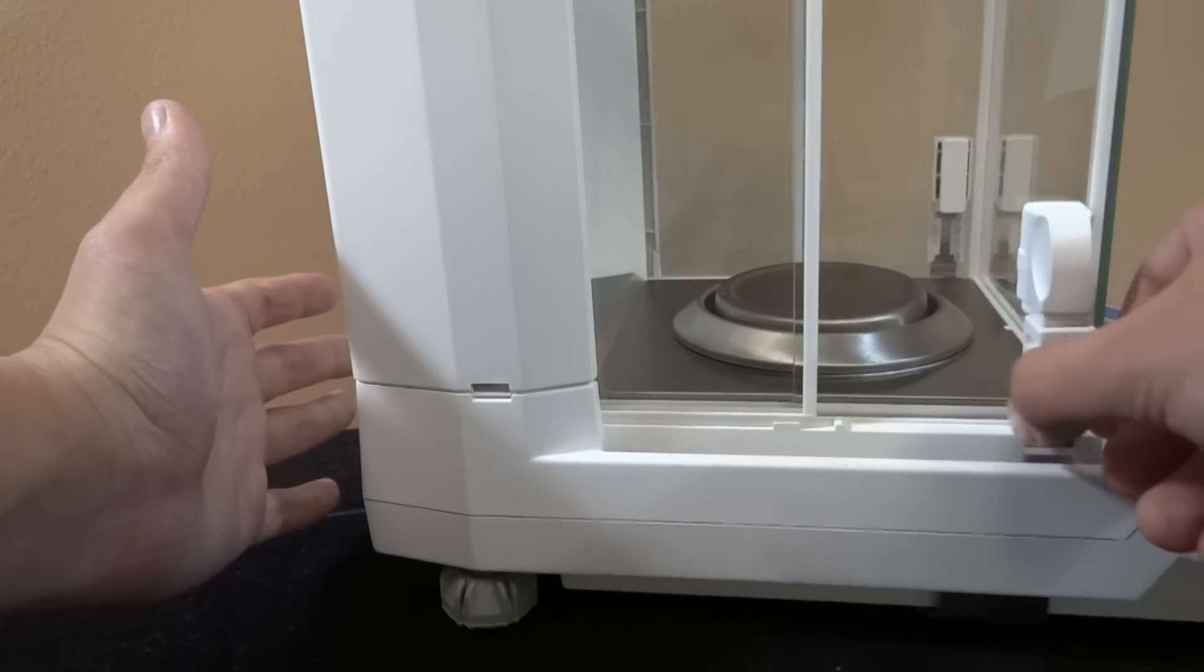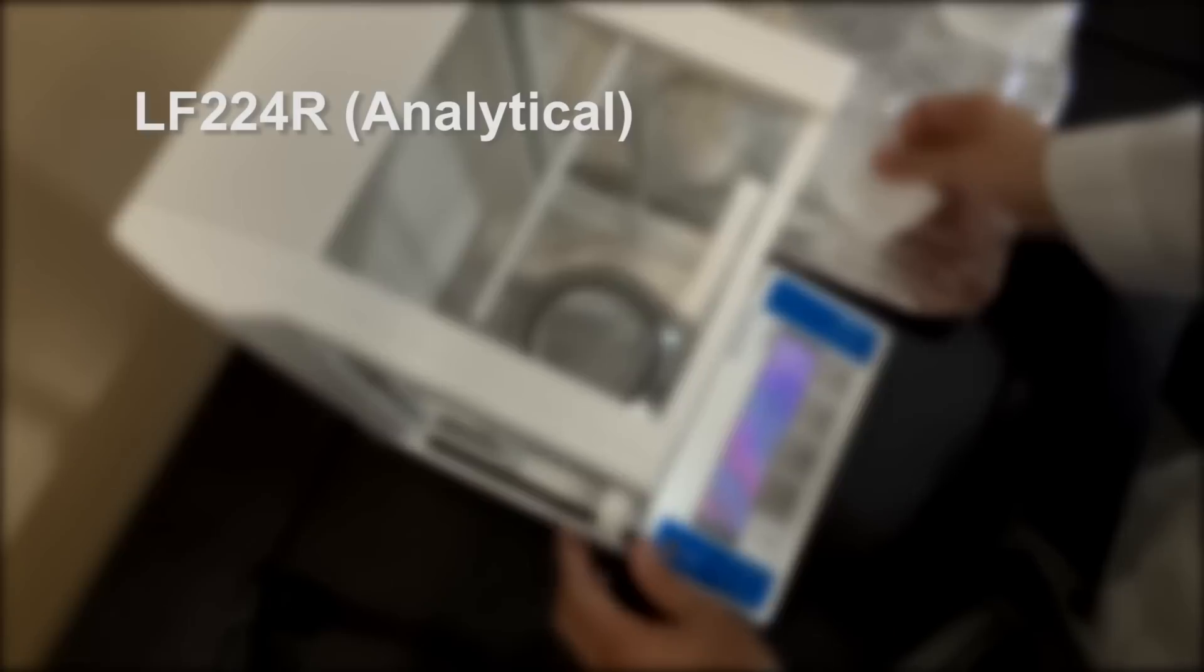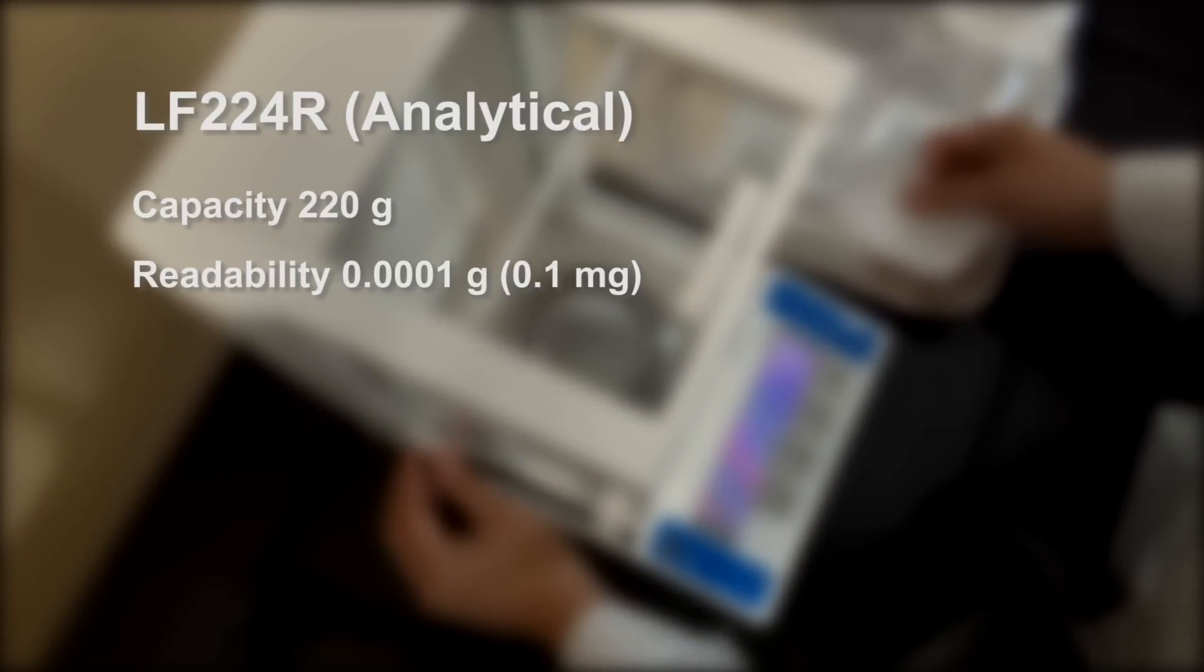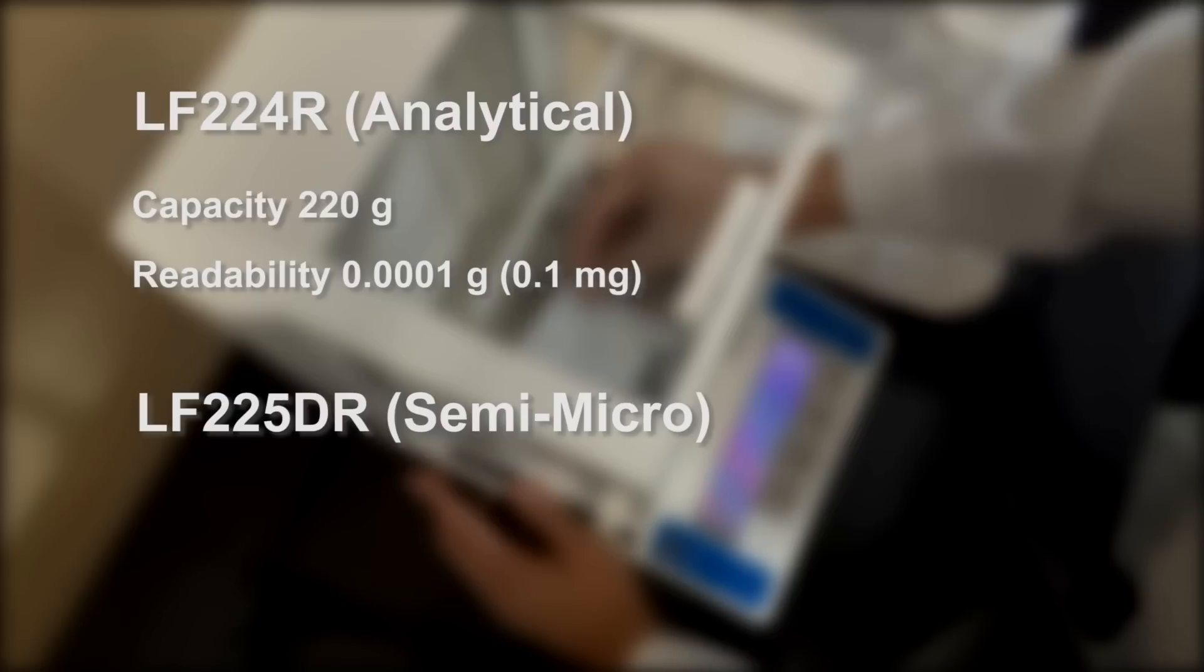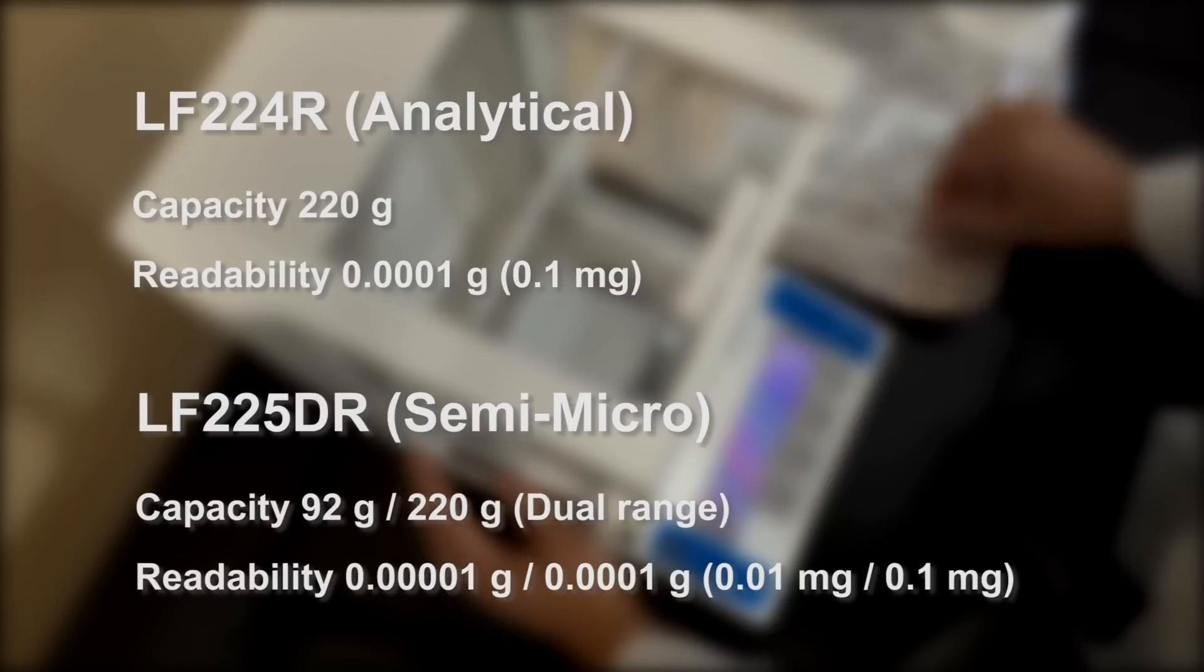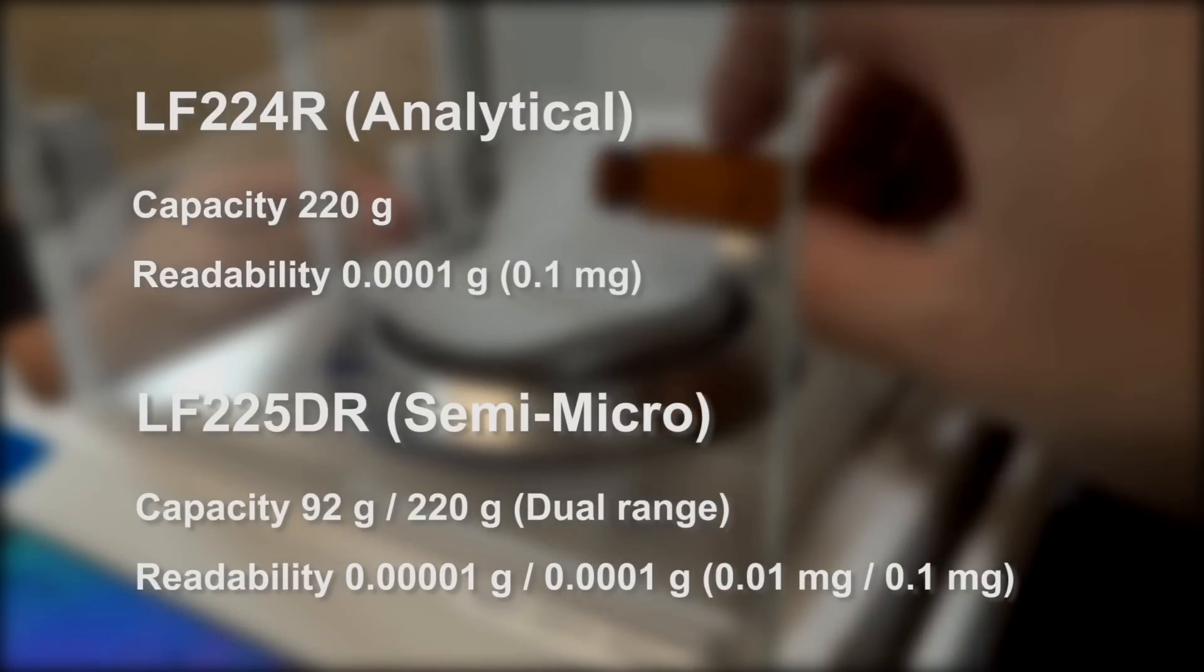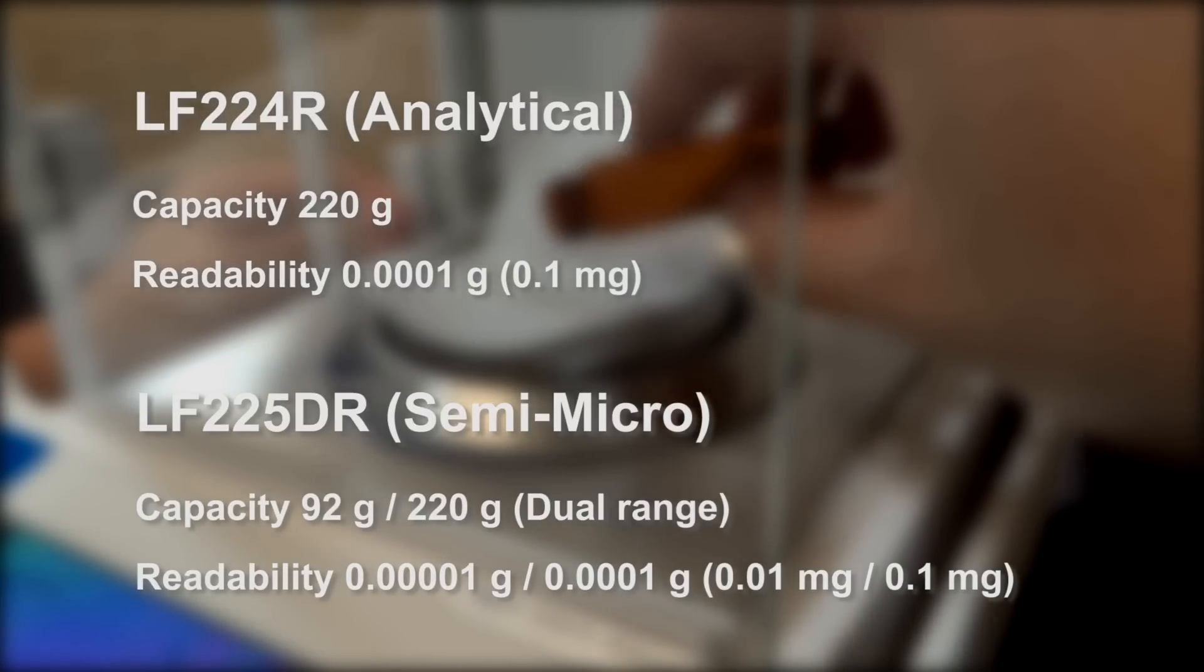The LF-224R offers analytical weighing at a tenth of a milligram. The LF-225DR is dual range and offers semi-micro weighing at .01 milligrams and analytical weighing at .1 milligrams.